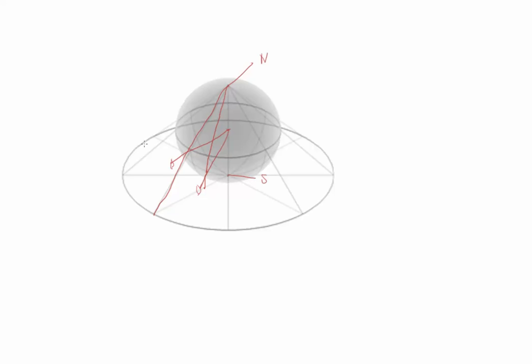And this flat surface becomes our stereographic projection. So you'll see a couple things. First of all, in stereographic projections we only plot the bottom half of the sphere.